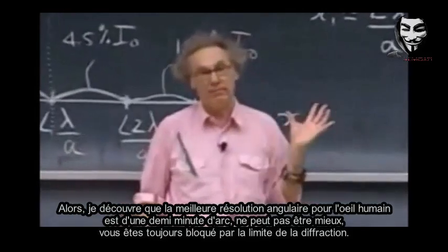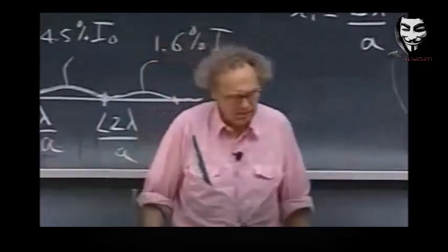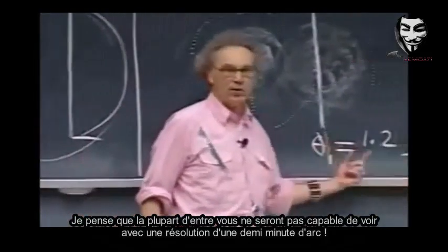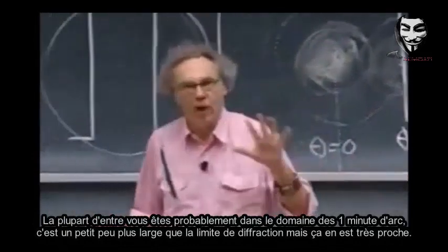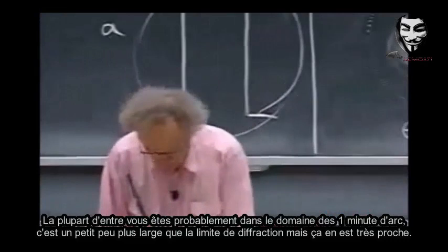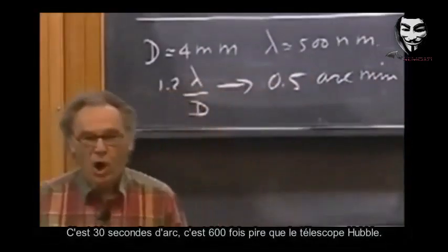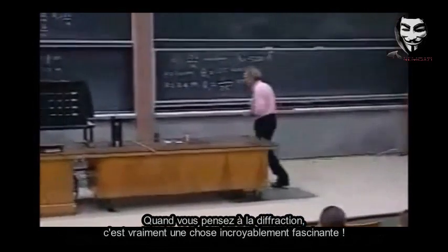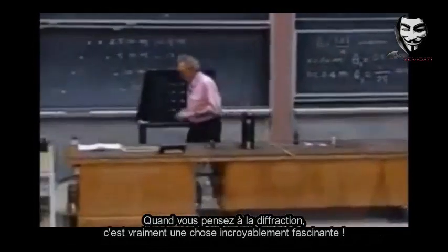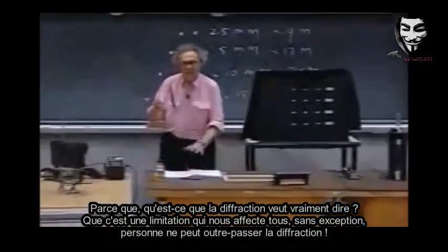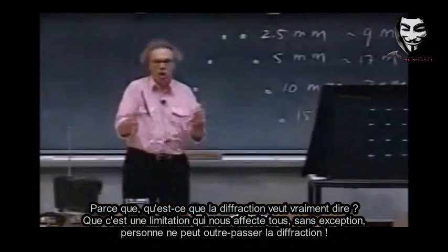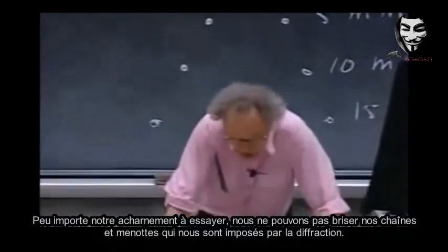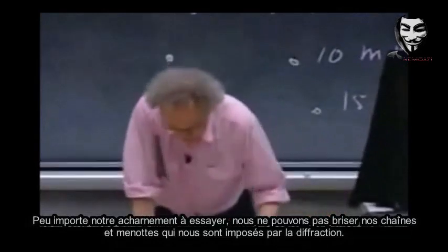Cannot be any better. There's just no way around it. You're always stuck with the diffraction limitation. Most of you will not be able to see with an angular resolution of one half arc minute. Most of you are probably in the domain of one arc minute. It's a little larger than diffraction limited, but very close to that — that is thirty arc seconds. That is six hundred times worse than the Hubble Space Telescope. When you think of diffraction, it's really an incredibly fascinating thing. Because what does diffraction actually mean? It is a limitation that is put upon us, on everyone — no one can bypass diffraction. No matter how hard we try, we can never undo our chains and handcuffs that are imposed upon us by diffraction.